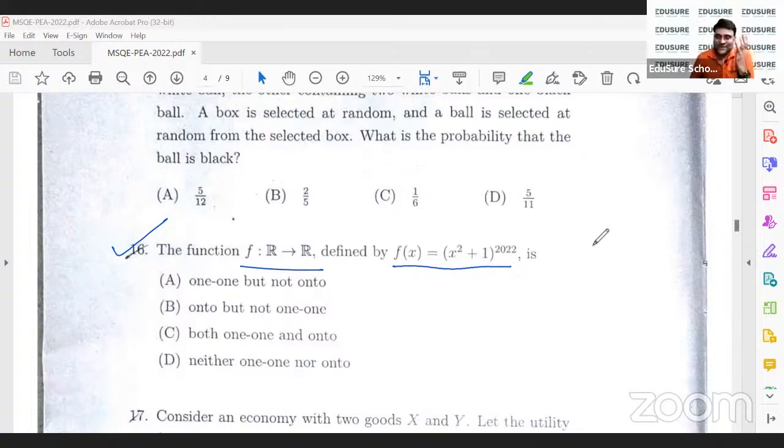What kind of a function is this? Please understand one thing. x square will always be greater than or equal to 0. It can never be negative. Therefore, x square plus 1 entirely will always be greater than or equal to 1.